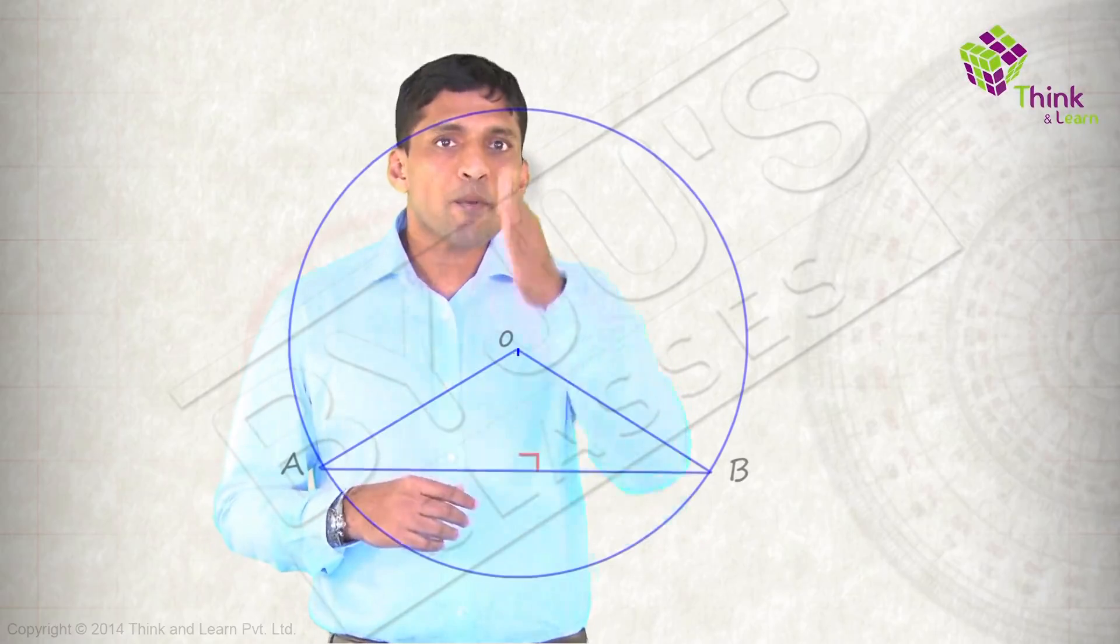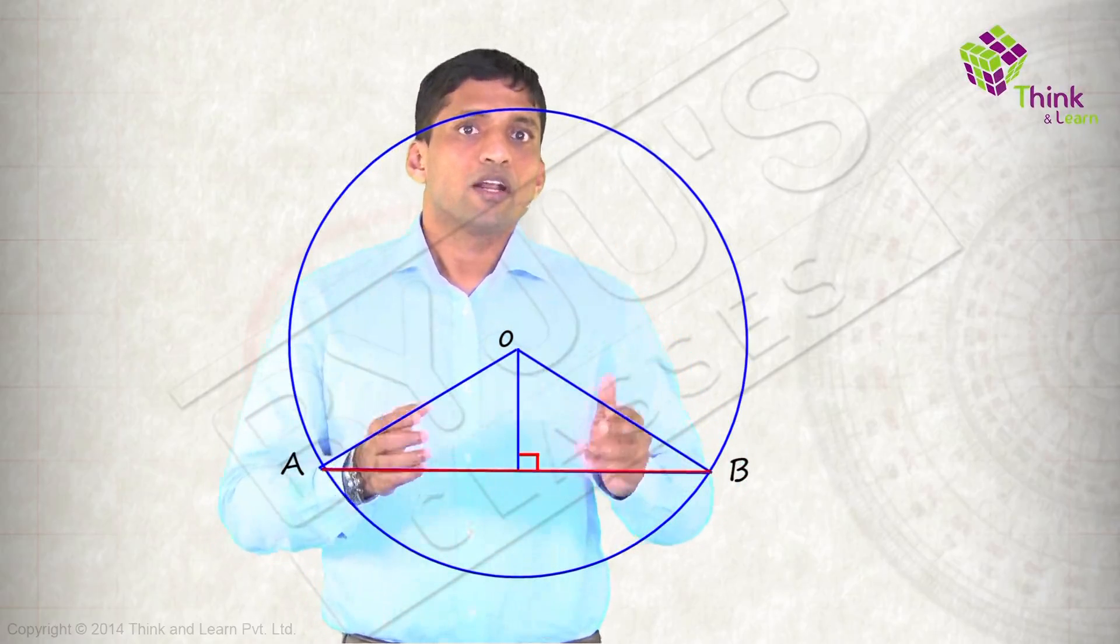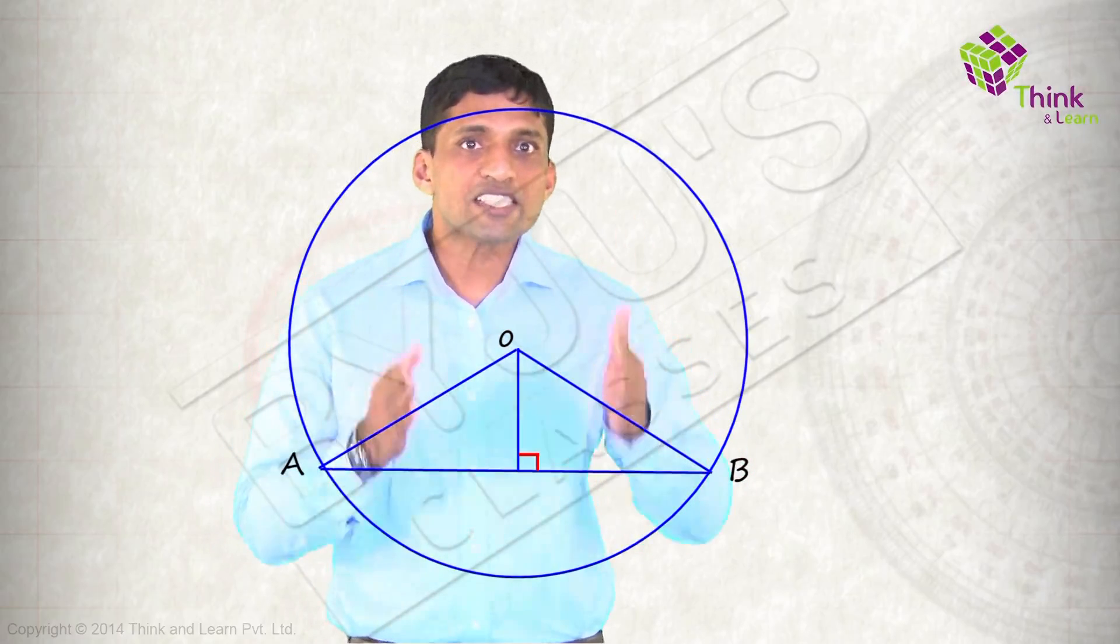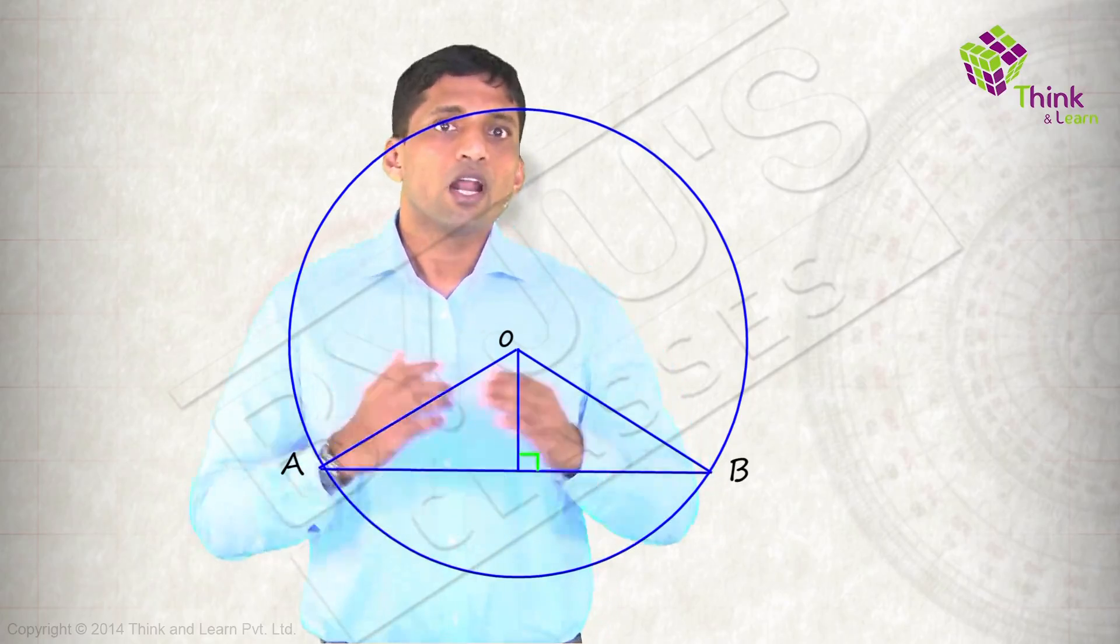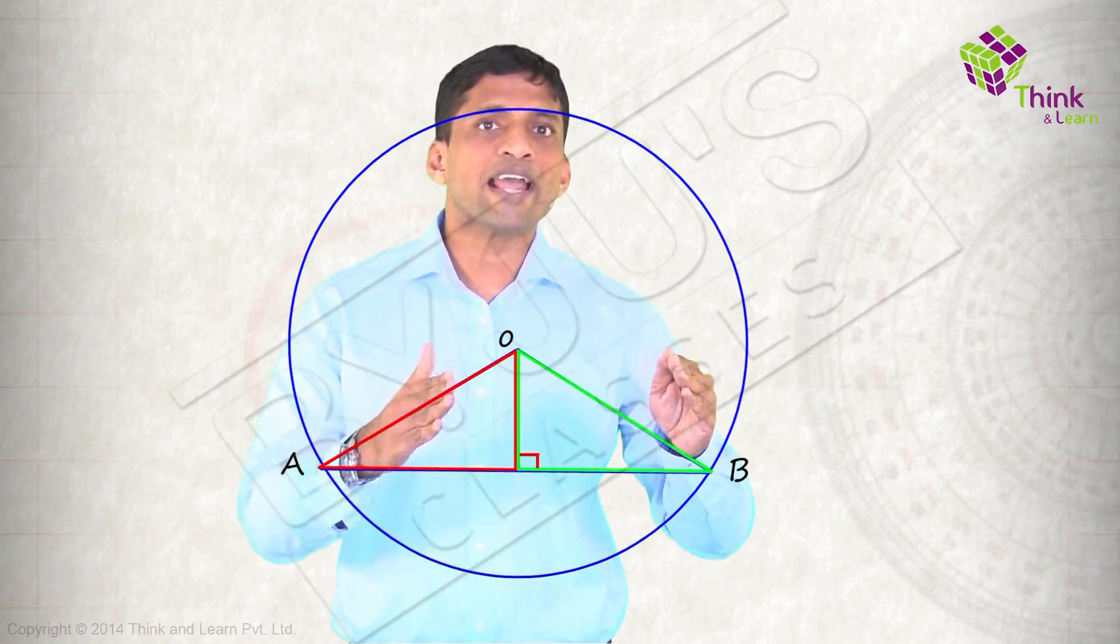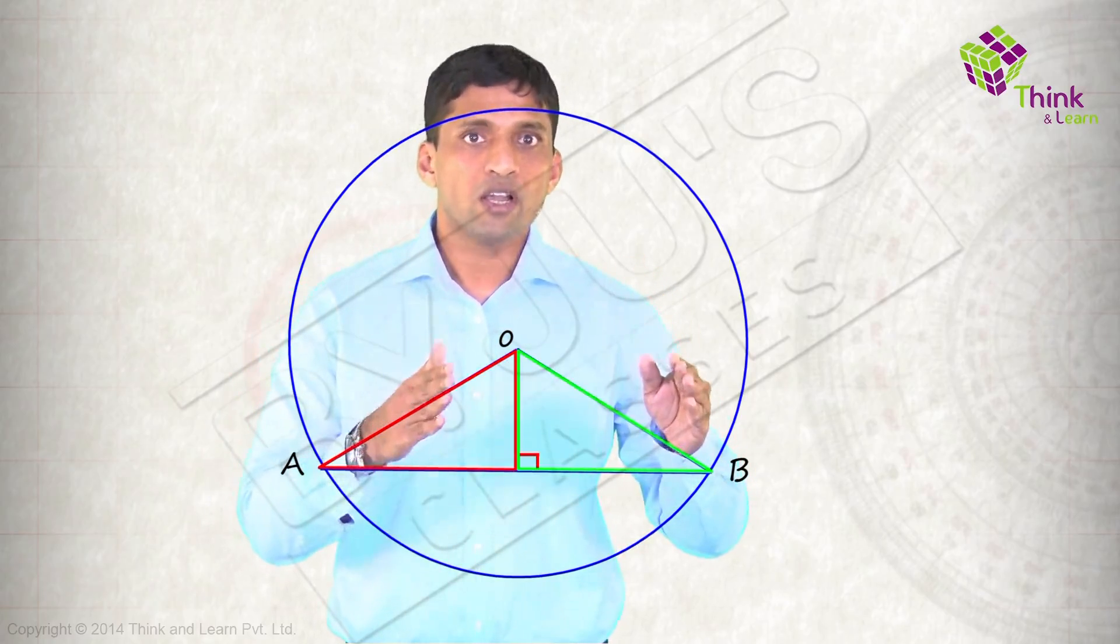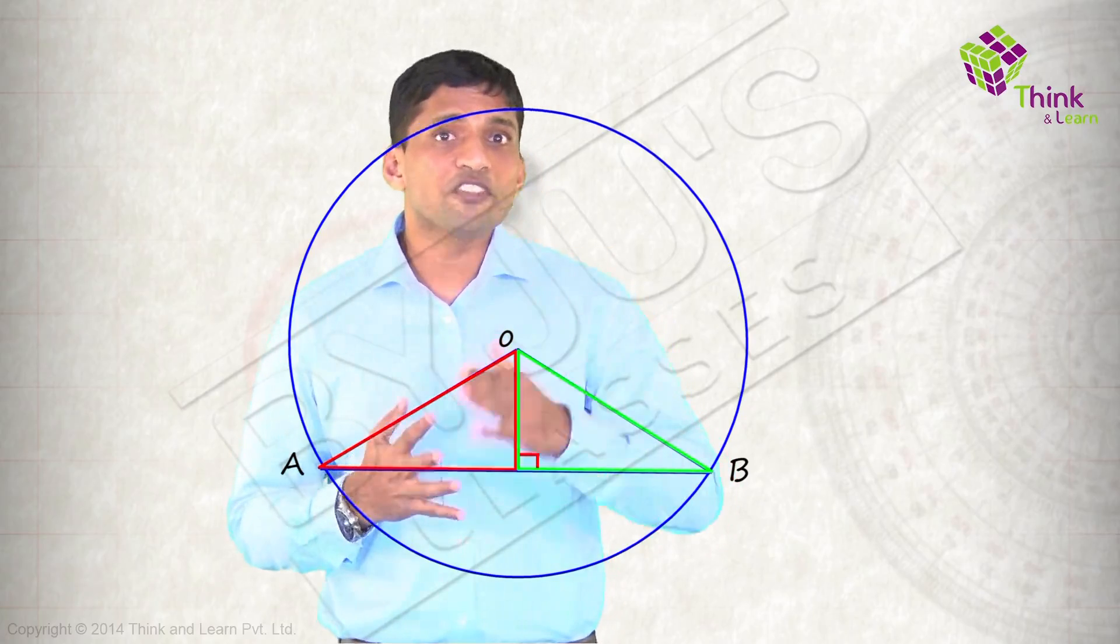Next, if I drop a perpendicular, then this chord will get bisected. The converse is, if it is getting bisected, this will be a perpendicular from the center. Both these theorems are proved by using these two triangles being congruent and by using RHS. So we discussed four of them till now.